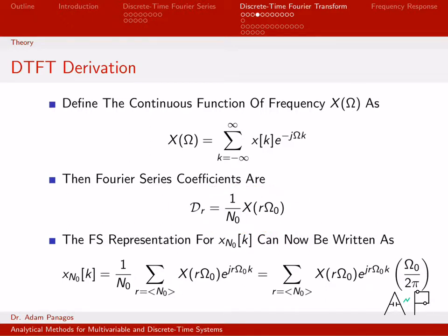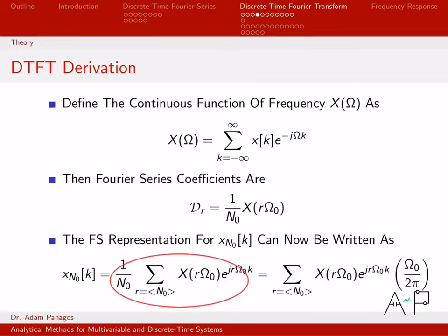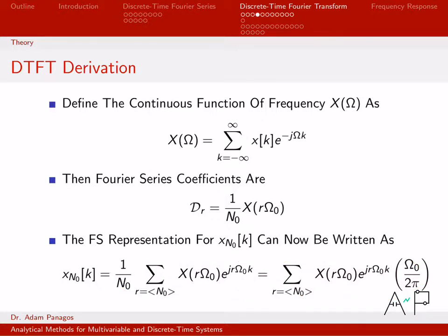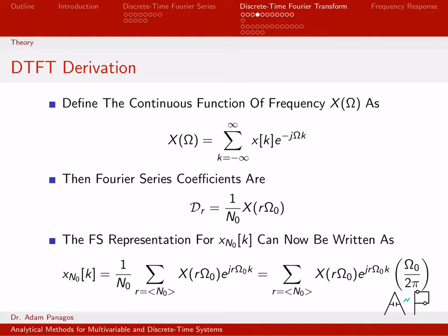That means the DTFS representation, instead of writing in terms of d sub r, we rewrite it in terms of this frequency function. Substituting that in, we still have a summation, but now instead of d sub r we have X of r omega-naught. Then I brought n-naught inside the summation. We know n-naught equals 2pi over omega-naught, which means 1 over n-naught equals omega-naught over 2pi. So I did that substitution to get rid of the n-naughts in place of omega-naughts.